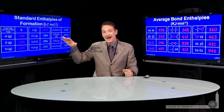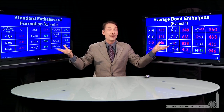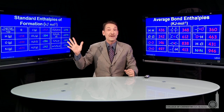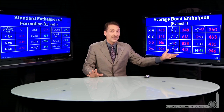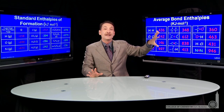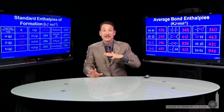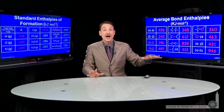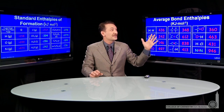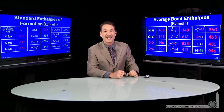So there's a relationship between the tables, and each method has its strengths and weaknesses. The strength of average bond enthalpies is that you only need to remember a small number of values and can calculate enthalpies for a wide variety of chemical reactions.